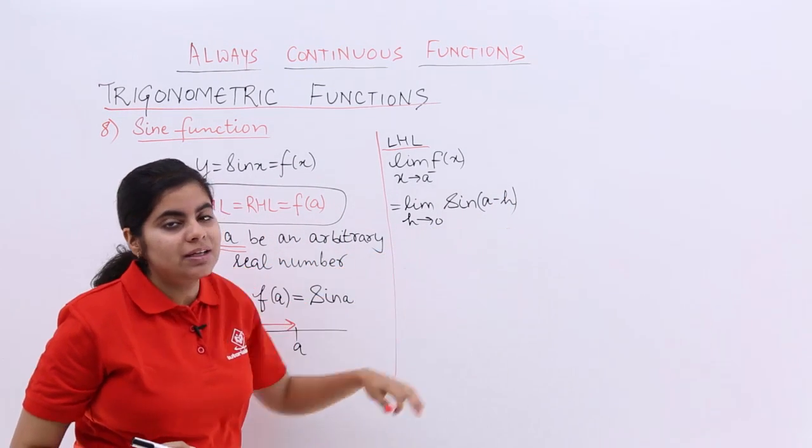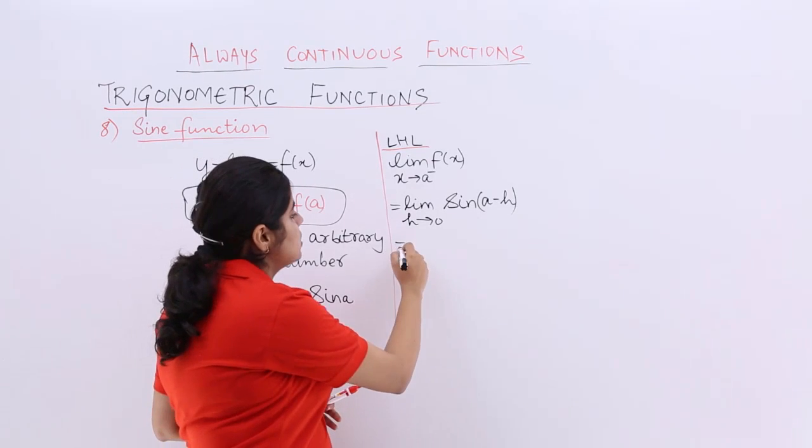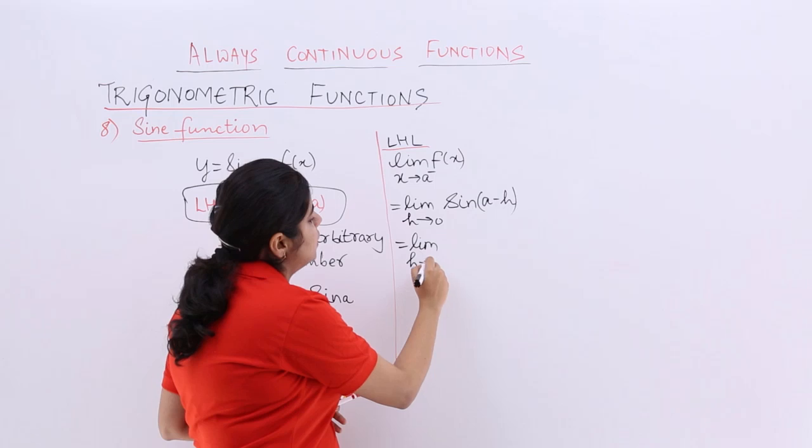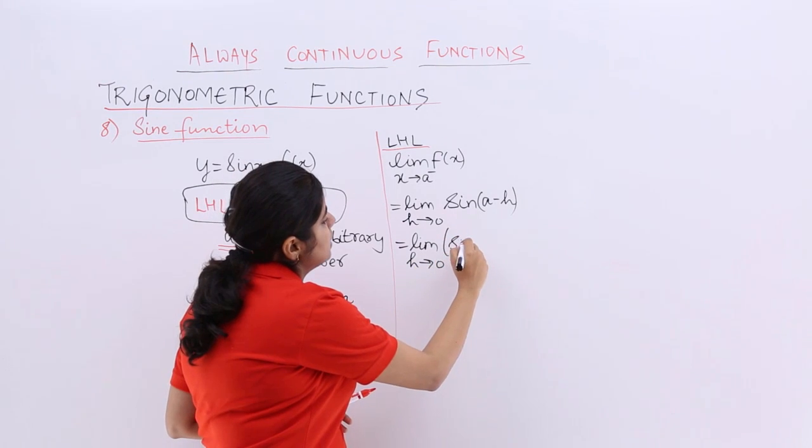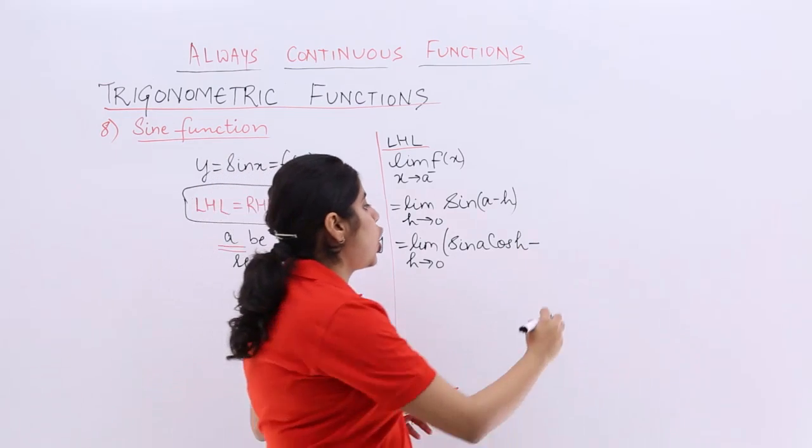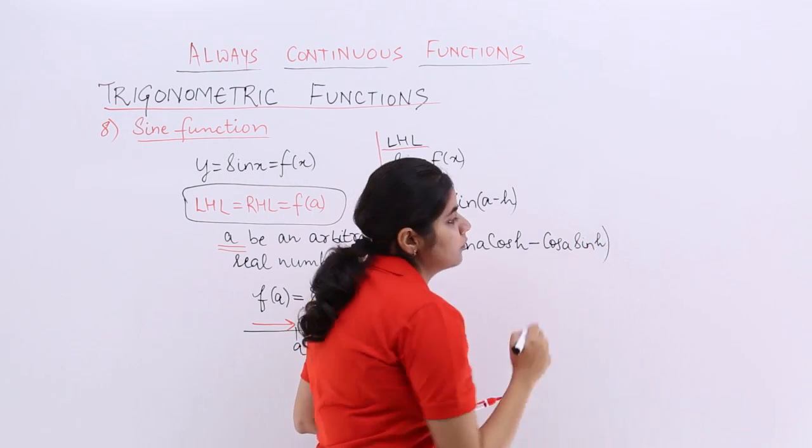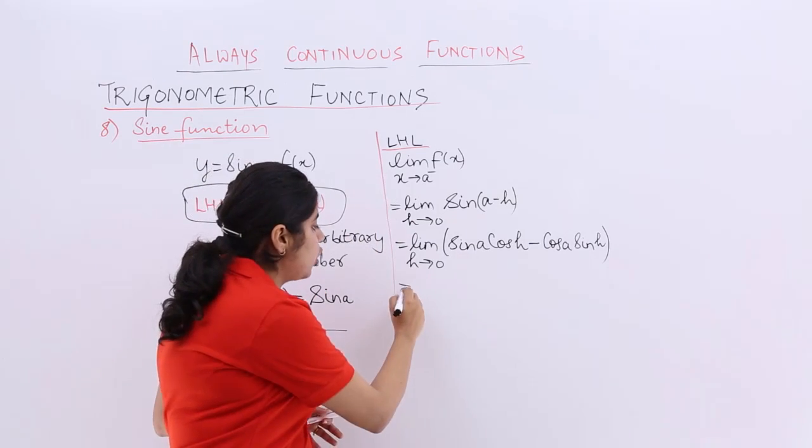Now what is the formula of sine(a minus b)? It is sine a cos b minus cos a sine b, right? So let's put that formula: limit h tends to 0, it becomes sine a cos h minus cos a sine h. Now what changes to be adopted? Let's see.